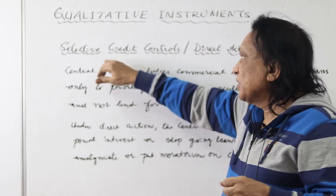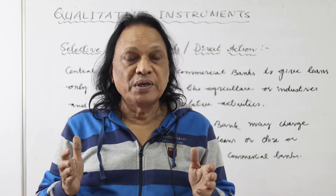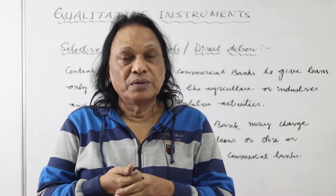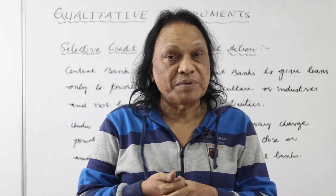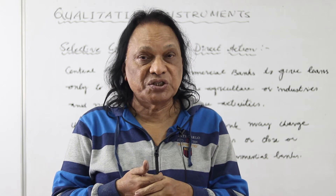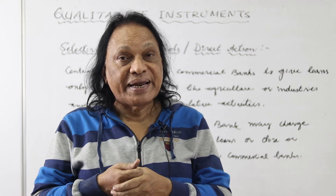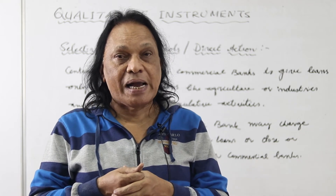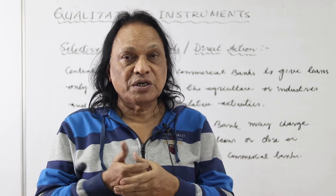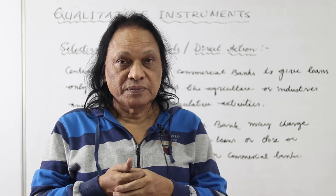To recap: in selective credit control, the central bank takes initiative and advises commercial banks to give loans only for priority sectors like agriculture and industries, not to provide loans for speculation. In case of a deflationary gap, recession, or depression, the central bank advises commercial banks to be more liberal in giving loans.